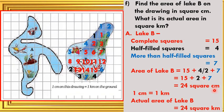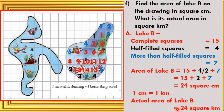What is the actual area of Lake B in square kilometers? As given in the figure, the scale is 1 centimeter on the drawing equals 1 kilometer on the ground. So the actual area of Lake B is 24 square kilometers.